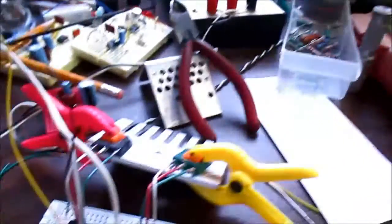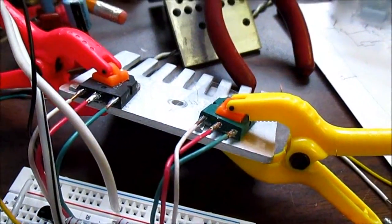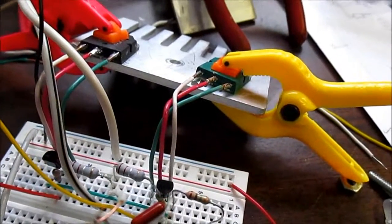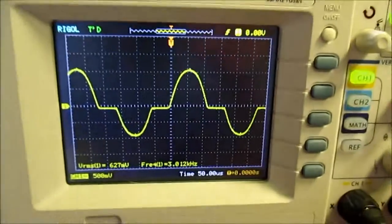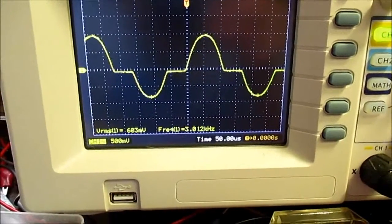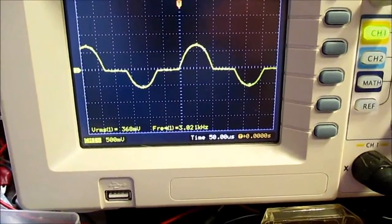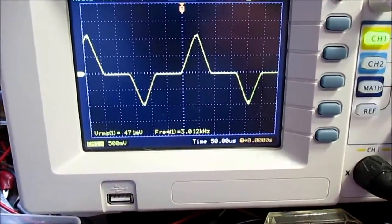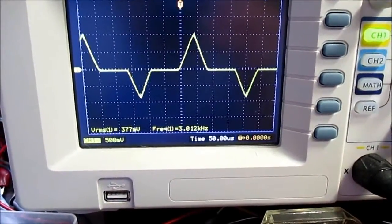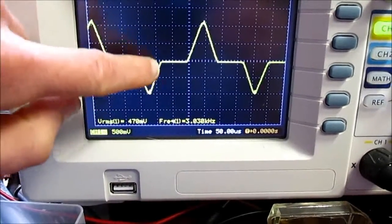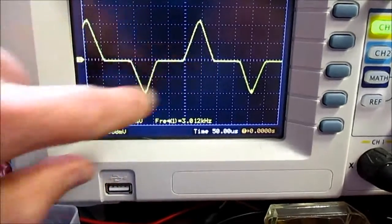Those Darlingtons, they don't have that 0.7 volt base to emitter junction to overcome. They have 1.2 volts or 1.4, whatever it actually is. Let's try sawtooth. There's the sawtooth waveform. Yeah, that's why we need the bias because this would sound terrible if we tried to play music.